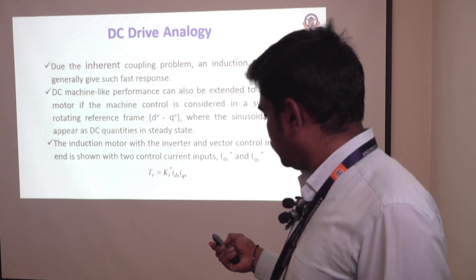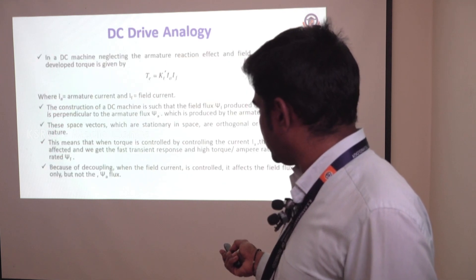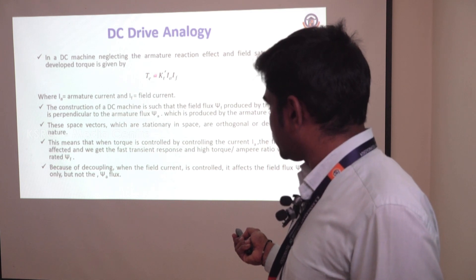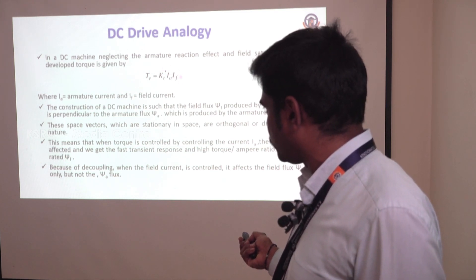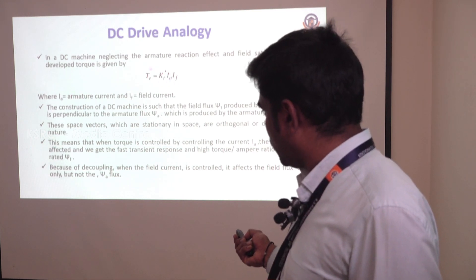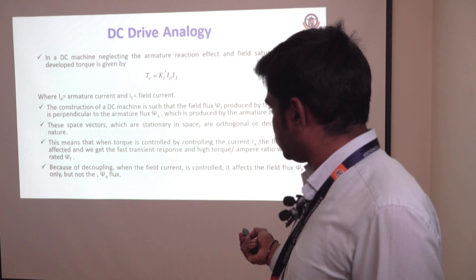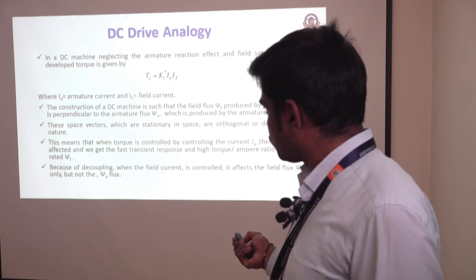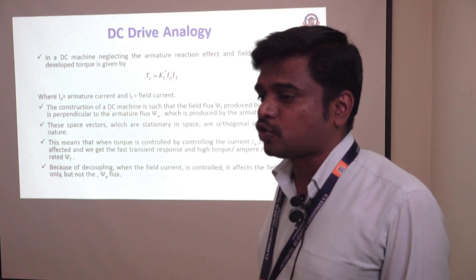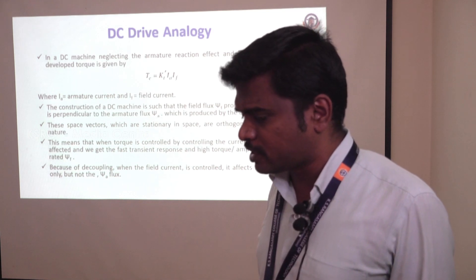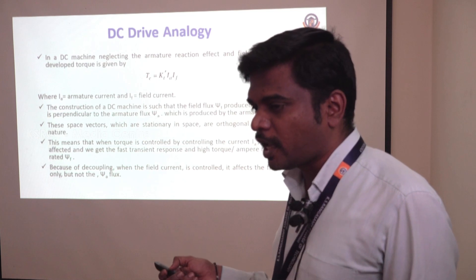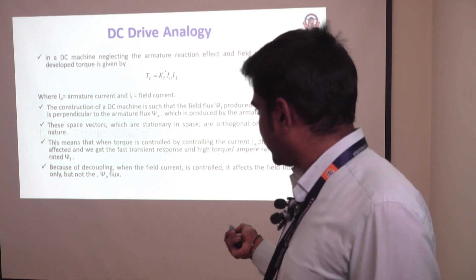Here you can see the torque equation of a DC motor. It involves a constant multiplied by armature current and field current. When field current is varied, the torque is not disturbed — the torque component varies accordingly but the armature current is not varied. Similarly, the flux is also not disturbed: when field flux is varied, armature flux is not disturbed, and when armature current is varied, field flux is not disturbed.